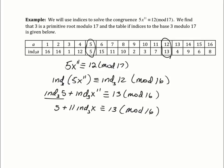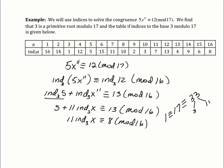So we have 5 plus 11 times the index of x congruent to 13 mod 16, bringing the power down using the property of indices. Subtracting 5 from both sides gives 11 times the index of x congruent to 8 mod 16. Then we find the inverse of 11 mod 16. Since 33 is congruent to 1 mod 16 and it's 3 times 11, we multiply both sides by 3. The index of x is 24, which reduces to 8 mod 16.